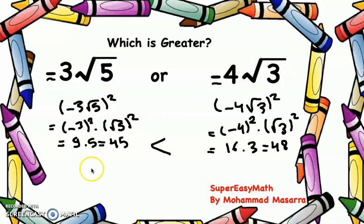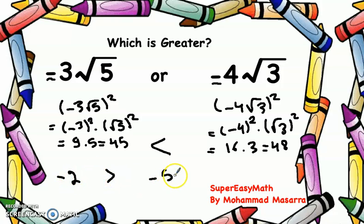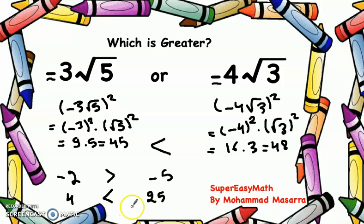If we take any two negative numbers, for example -2 and -5, we know that -2 is greater than -5. What happens if we square both sides? (-2)² equals 4 and (-5)² equals 25. We know that 4 is smaller than 25.